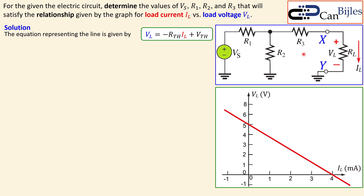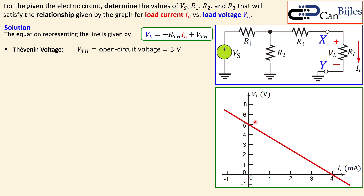Looking between the two nodes determines the Thevenin resistance, and the open-circuit voltage gives the Thevenin voltage. Using Thevenin's theorem, the Thevenin voltage is the open-circuit voltage — in our case, five volts — because the current is zero there, meaning the load is an open connection.